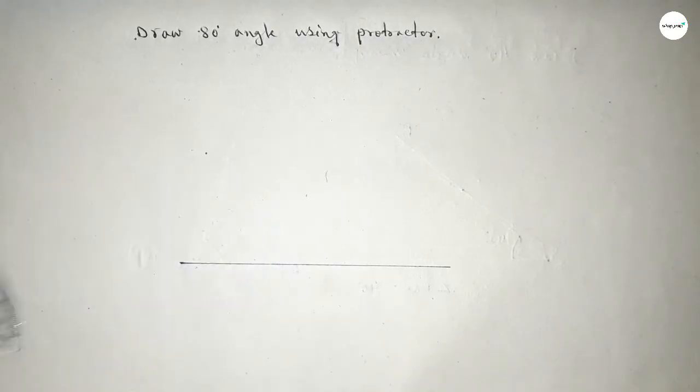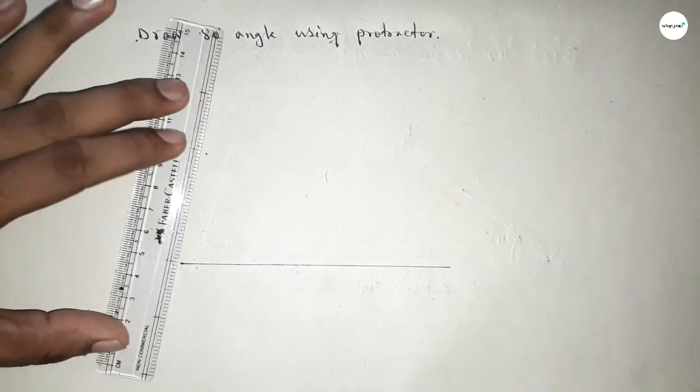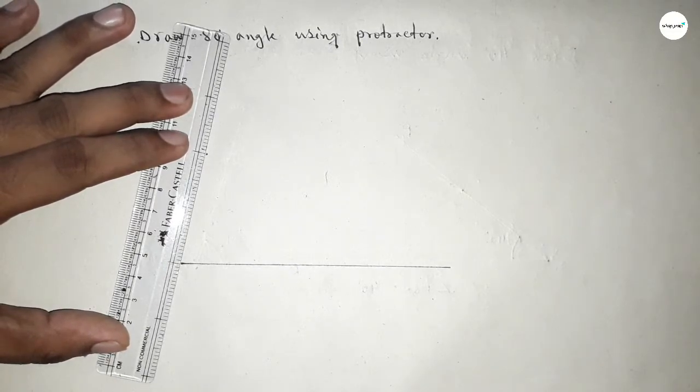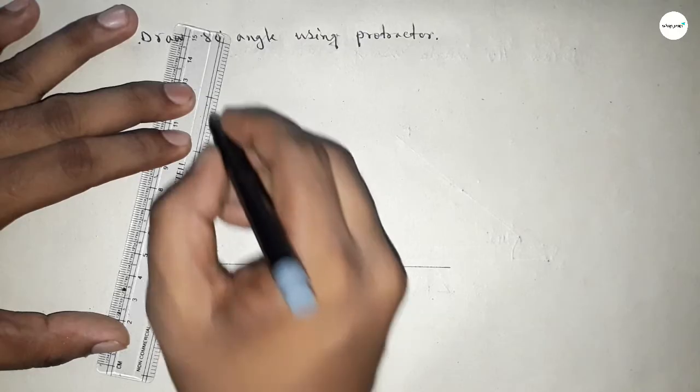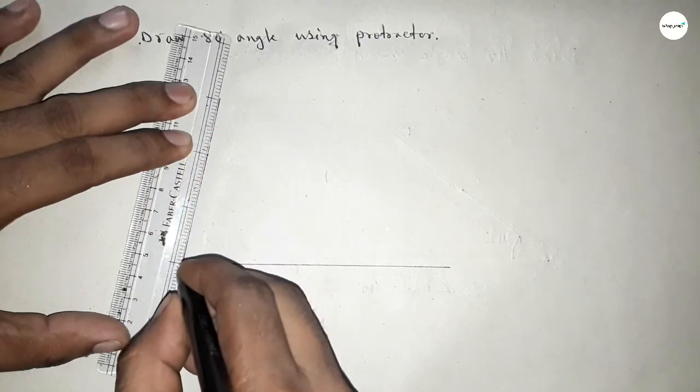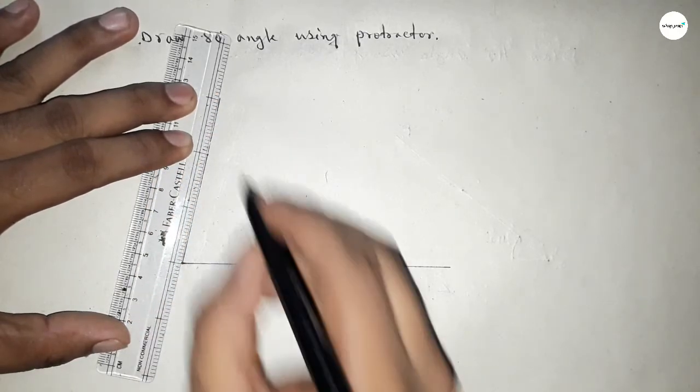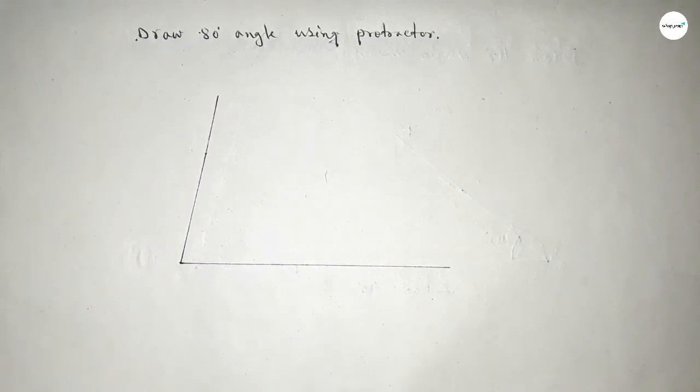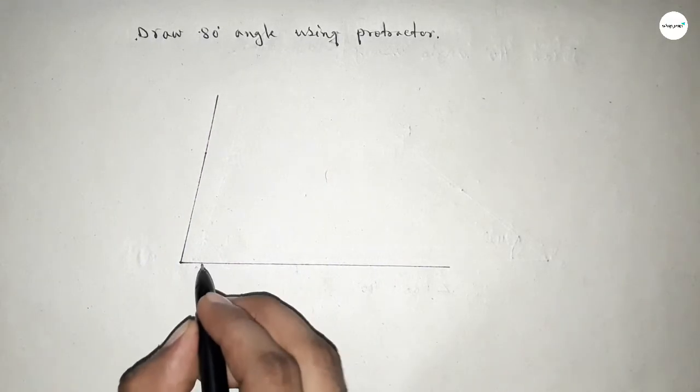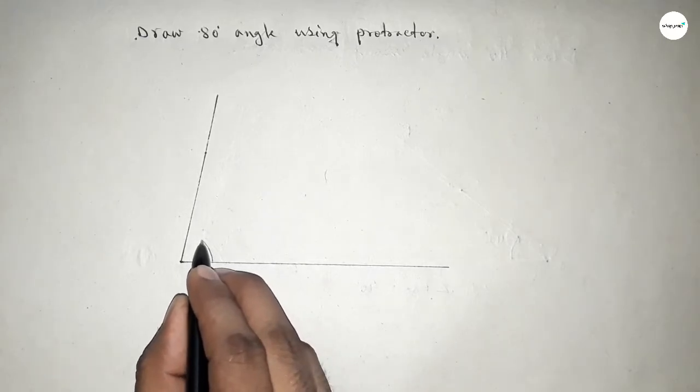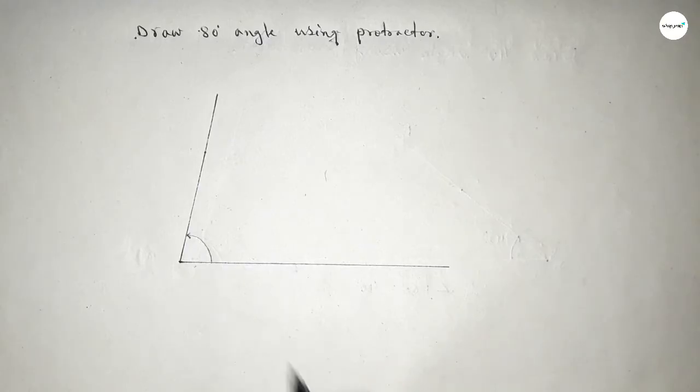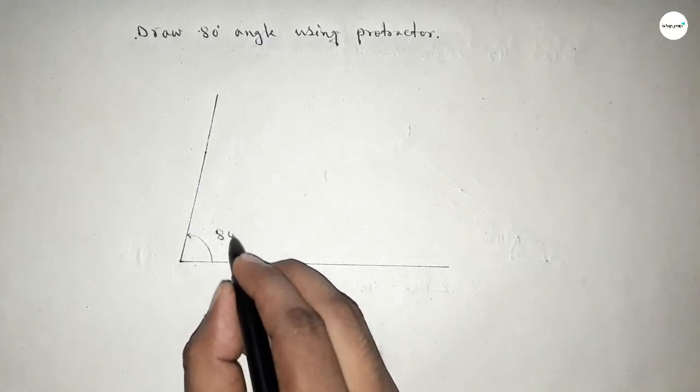Now we have to join this to get 80 degree angle. So first, joining this side. Okay, so we got 80 degree angle by joining this. So this is 80 degree angle.